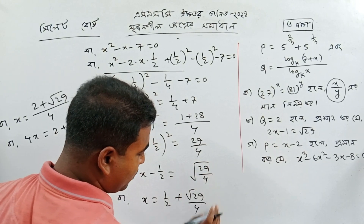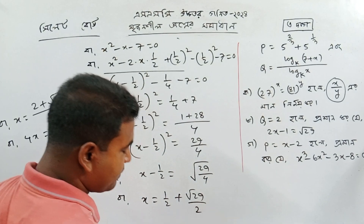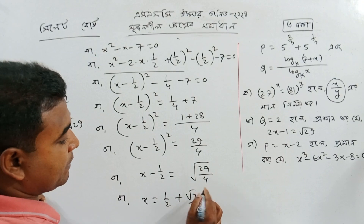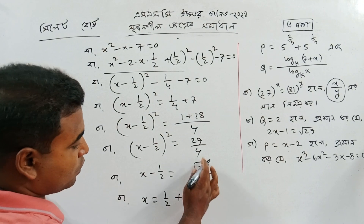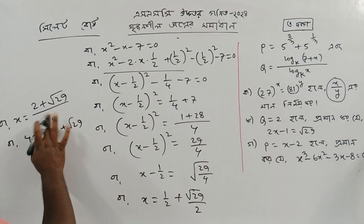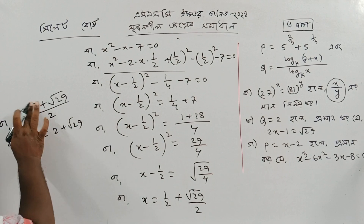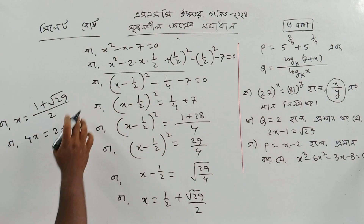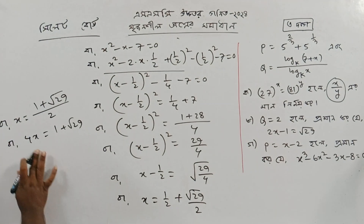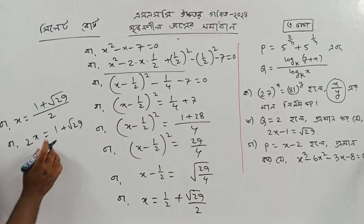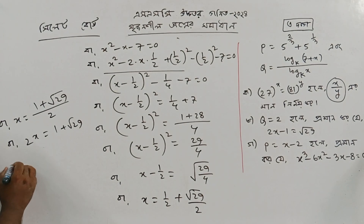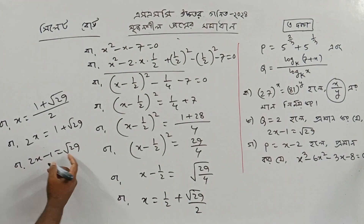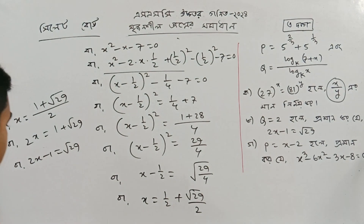What is the root of 29/4? This becomes 2. So if this is root of 29/4, it simplifies. Why do we write 1 plus root of 29? We go to 2x equals 1 plus root of 29. So 3 equals 2x minus 1 equals root of 29, which is our required answer.